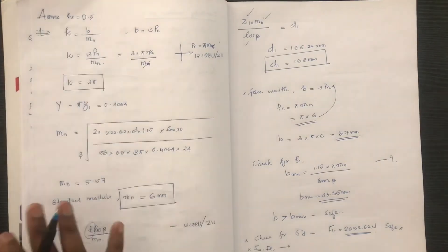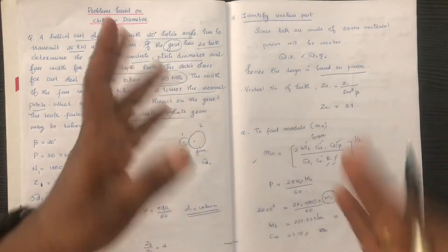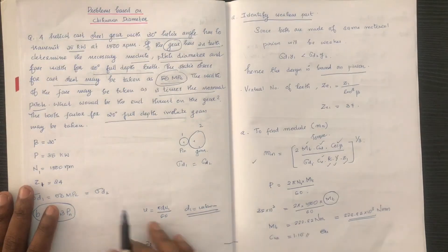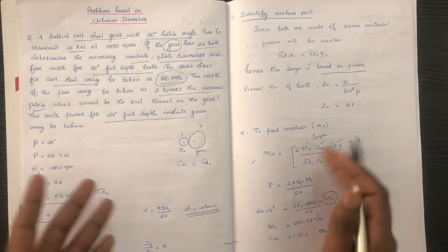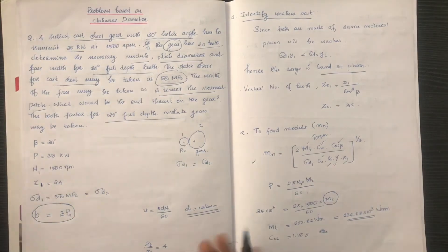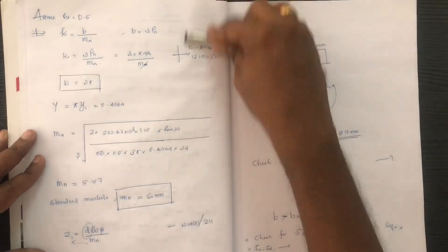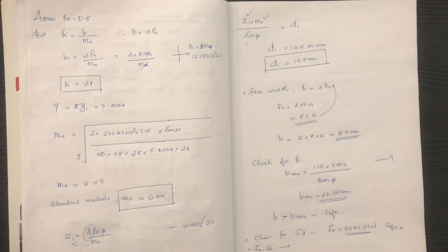The design values are satisfactory. Dynamic load FD, wear load FW, and the diameter calculations are all verified. We now confirm the diameter of the gear, completing the helical gear design procedure.